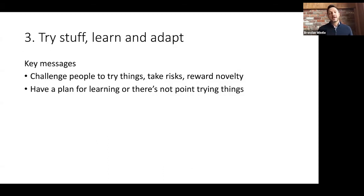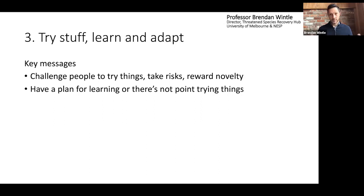The third point is that we just have to try stuff, learn, and adapt. There's an adaptive management cycle in this slide simply to say we've got to reward people for taking risks and trying things, but we also have to have a really clear plan for learning from these experiments — otherwise we're not going to be able to generalize our findings and make them useful to other contexts.